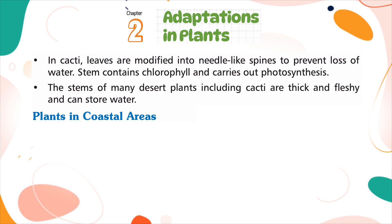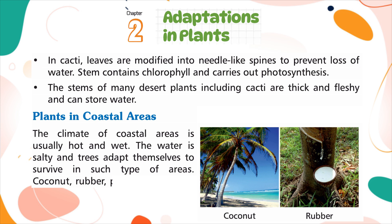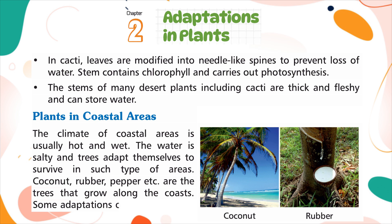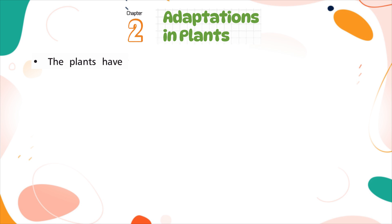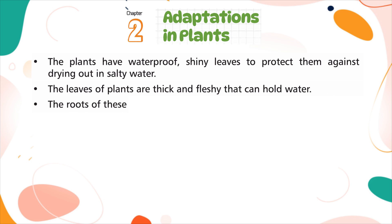Plants in Coastal Areas. The climate of coastal areas is usually hot and wet. The water is salty, and trees adapt themselves to survive in such conditions. Coconut, rubber, pepper, etc. are trees that grow along the coasts. The plants have waterproof, shiny leaves to protect them against drying out in salty water. The leaves of plants are thick and fleshy and can hold water. The roots of these plants are thick and tough to cling on to the rocks.